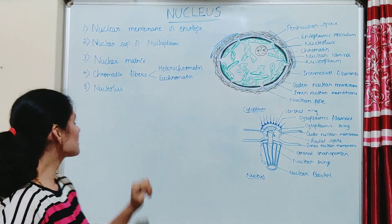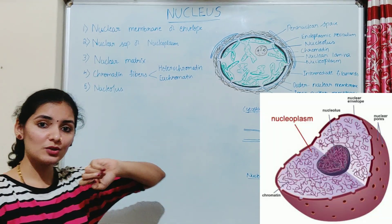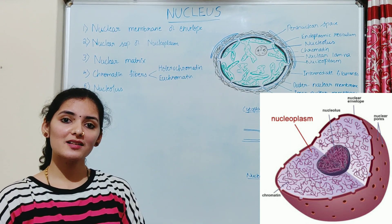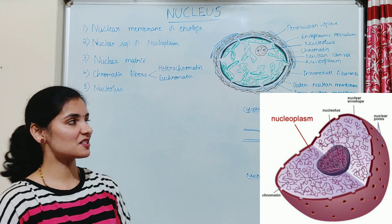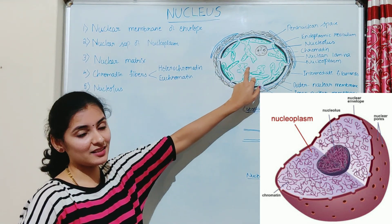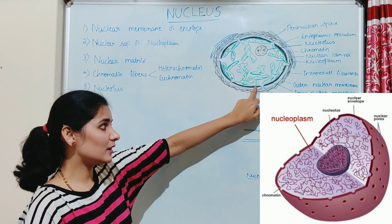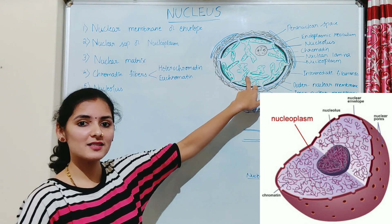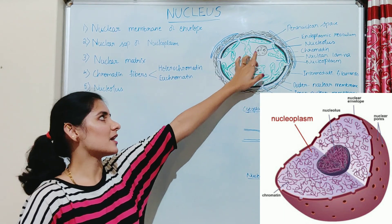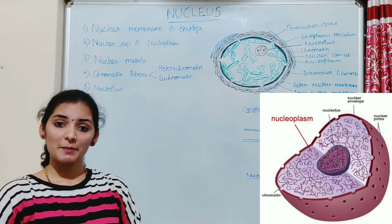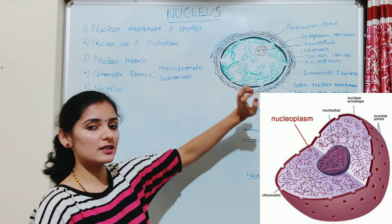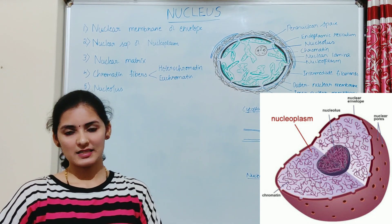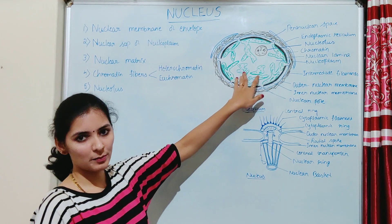The second component of the nucleus is the nuclear sap, also known as nucleoplasm or karyolymph. The nucleoplasm is a transparent semi-solid substance present inside the nucleus, between the inner nuclear membrane and the nucleolus. The chromatin fibers and the nucleolus are suspended in this nucleoplasm, which also consists of nucleoproteins, nucleic acids, enzymes, and minerals.